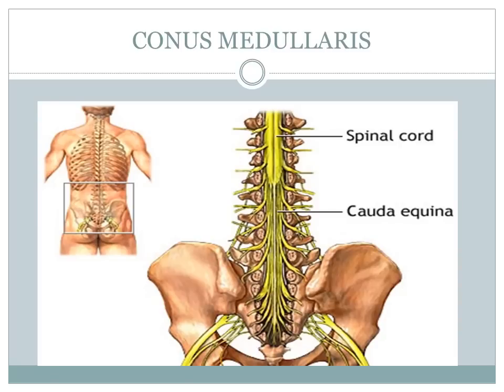Those with the handout notes or PowerPoint presentation should review the diagram of the conus medullaris and the cauda equina. Note that the spinal nerve roots dangle down — there are many of them, which is why it's called a horse's tail. Essentially all spinal nerve roots that dangle down are double in number because the dorsal and ventral roots dangle independently. The dorsal and ventral roots do not coalesce and are not joined in a common perineurium until immediately before the exiting foramen.